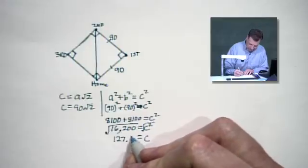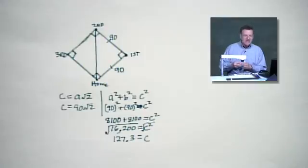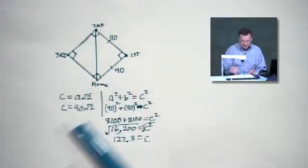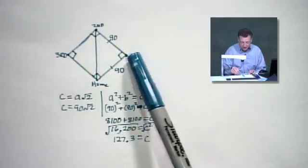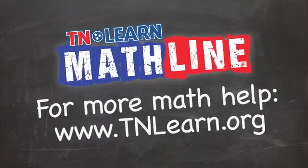And why don't we just give yourself three-tenths of a foot there. That's a long throw. And like I said, shortstop, you're playing right here, you'd have a little bit less, but it's still a pretty healthy throw if you're going to first base or you're taking it to home. For more math help, visit tnlearn.org.